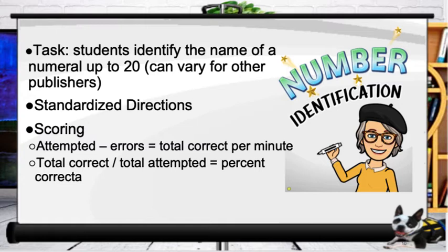The next measure is number identification. For this, the task is that students identify the name of a numeral up to 20, though this can vary depending on the publisher, such as AIMSweb or different companies. Again we use standardized directions, and our scoring is the attempted numbers minus the errors to give us total correct per minute, or total correct divided by total attempted to give us a percent correct.